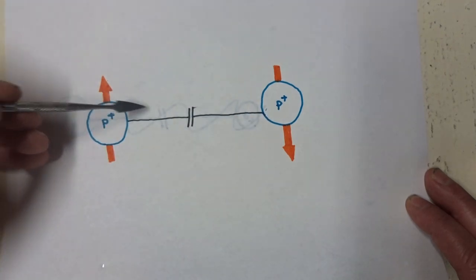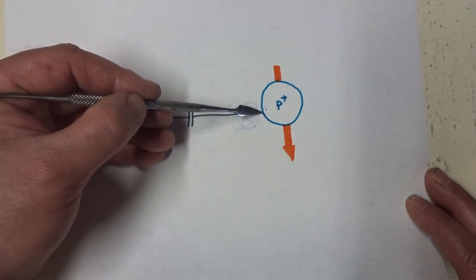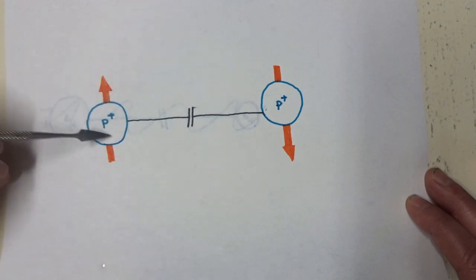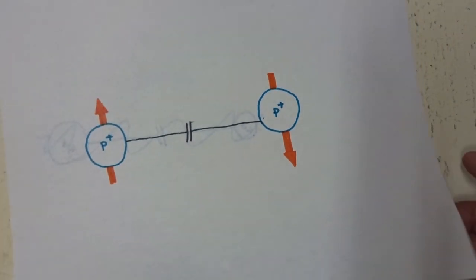Yet when observed, one particle's spin is immediately known, and it's tangled to the other particle's spin, which becomes immediately known. It's like there's communication between these two particles over a great distance. That's quantum entanglement.